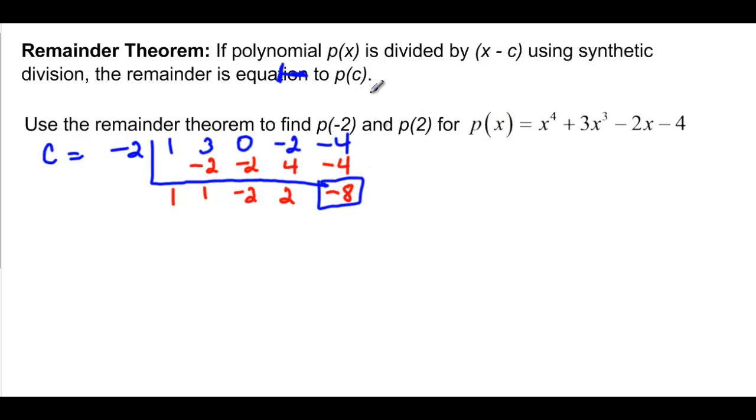It also asks us to do it with positive 2. So again, that means 2 is on the outside. 1, 3, 0, negative 2, negative 4. And bring down the 1 and multiply. Add, we get 5. 5 times 2 is 10, plus 0 is 10. 10 times 2 is 20, minus 2 is 18. And 18 times 2 is 36, and 36 minus 4 should be 32. And let's just double check one of them.